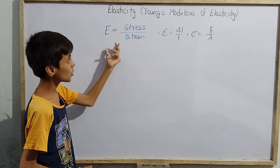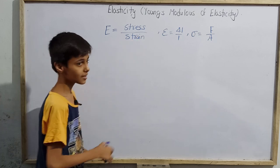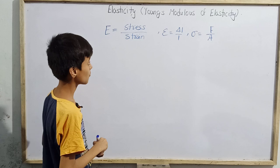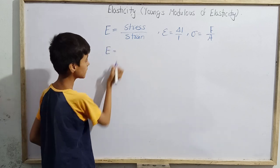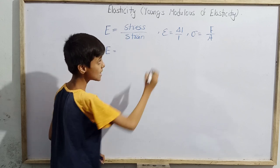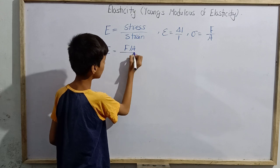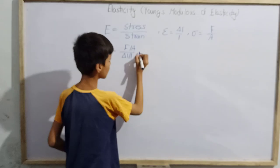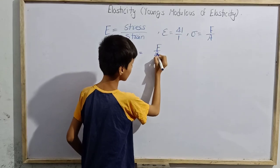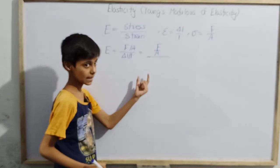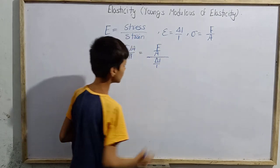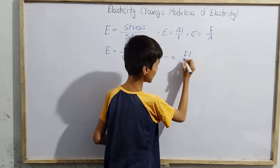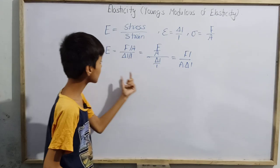Since modulus of elasticity is the ratio of stress to strain, we can write E equals (F/A) divided by (ΔL/L). Writing this in a cleaner form: E equals F over A, divided by ΔL over L. To solve, we multiply F by L and A by ΔL, which gives us E equals F times L divided by A times ΔL.